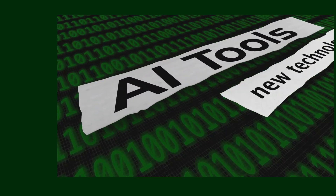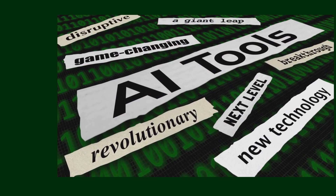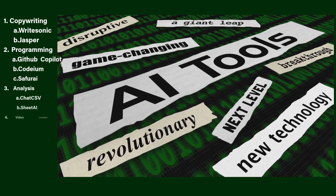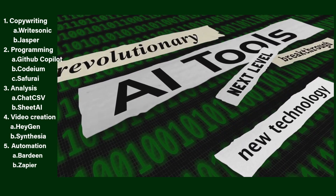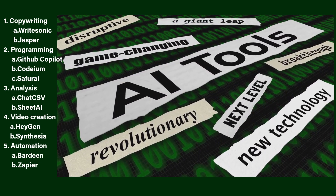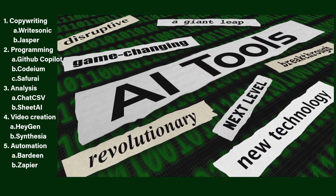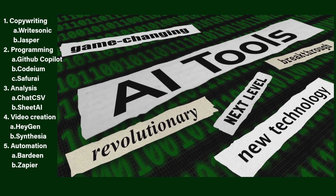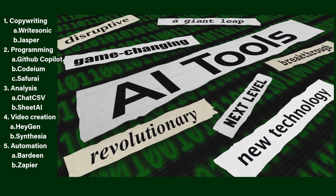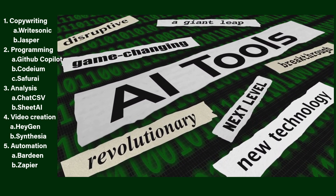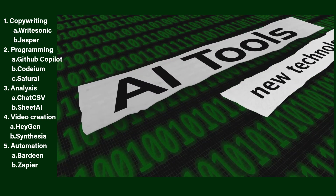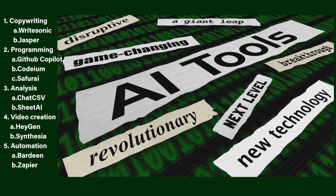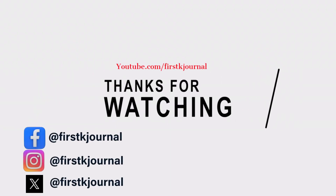For each type of task, there are specific AI tools available. For copywriting, you can use Writesonic or Jasper. For programming, we have Codeium and GitHub Copilot. For data analysis, you have ChatCSV and Sheet AI. For video creation, you have Synthesia and HeyGen. Lastly, for automation, you can use Zapier or Bard. All these AI tools are available for easy usage.